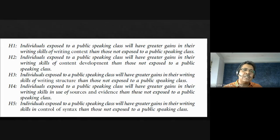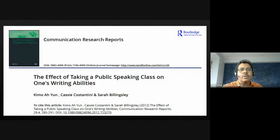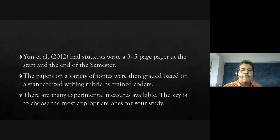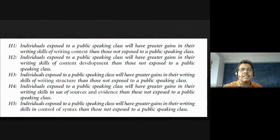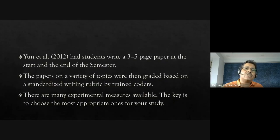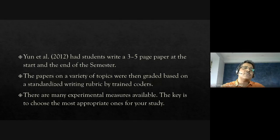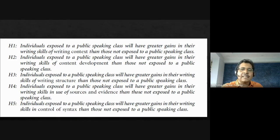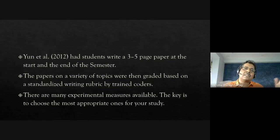The researchers found students — some taking the public speaking class and others taking a different class — so the assignment was not random. They had students write a three-to-five page paper at the start and end of the semester as the pre-test and post-test. The dependent variables were writing skills, not temperature or blood pressure — this is social science research.